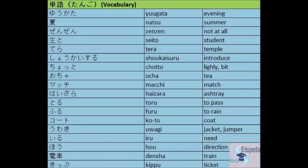'Toru' — to pass. 'Furu' — to rain. 'Koto' — coat. 'Koto' is a foreign word and that's why it's written in katakana. The next word is 'uwaagi' — jacket or jumper. 'Iru' — need.